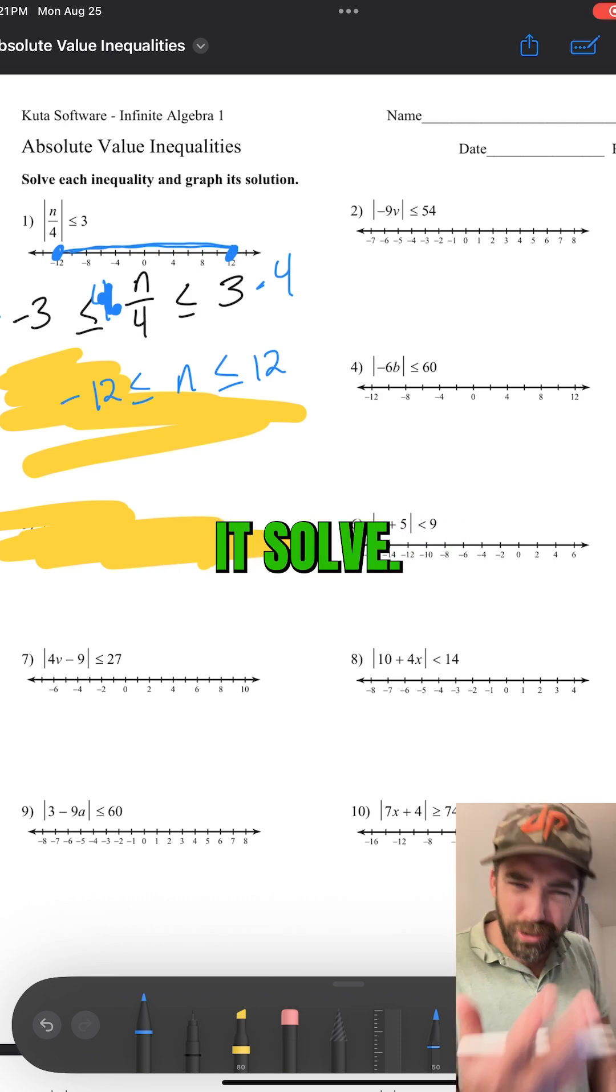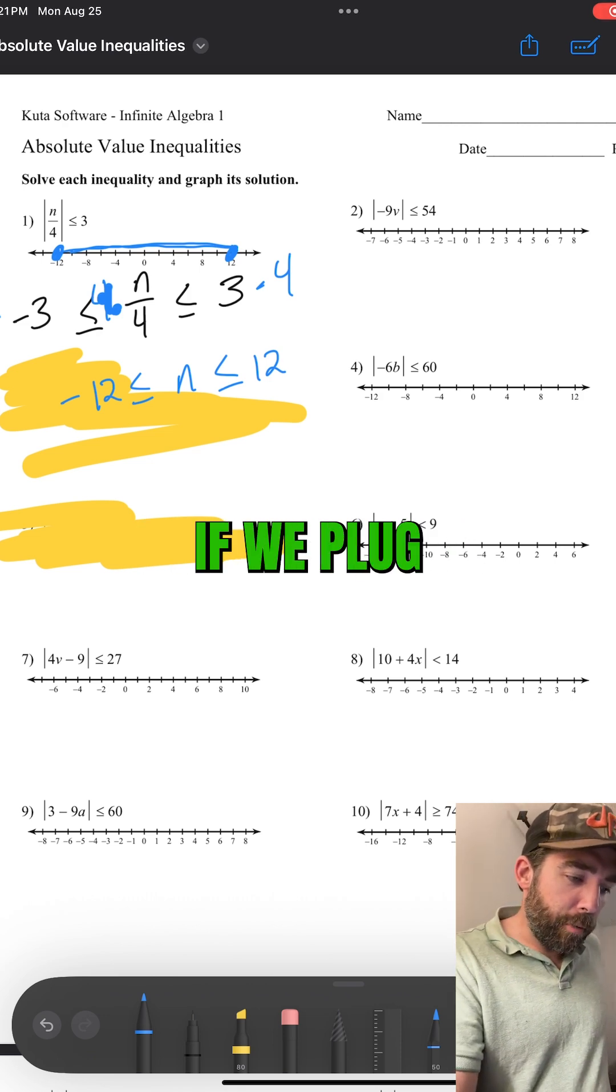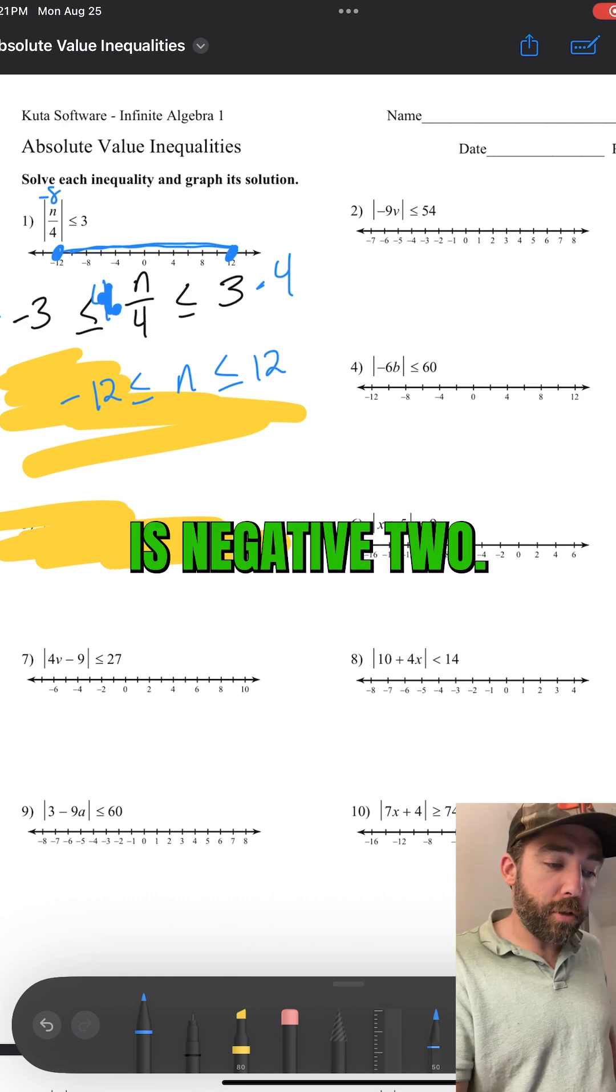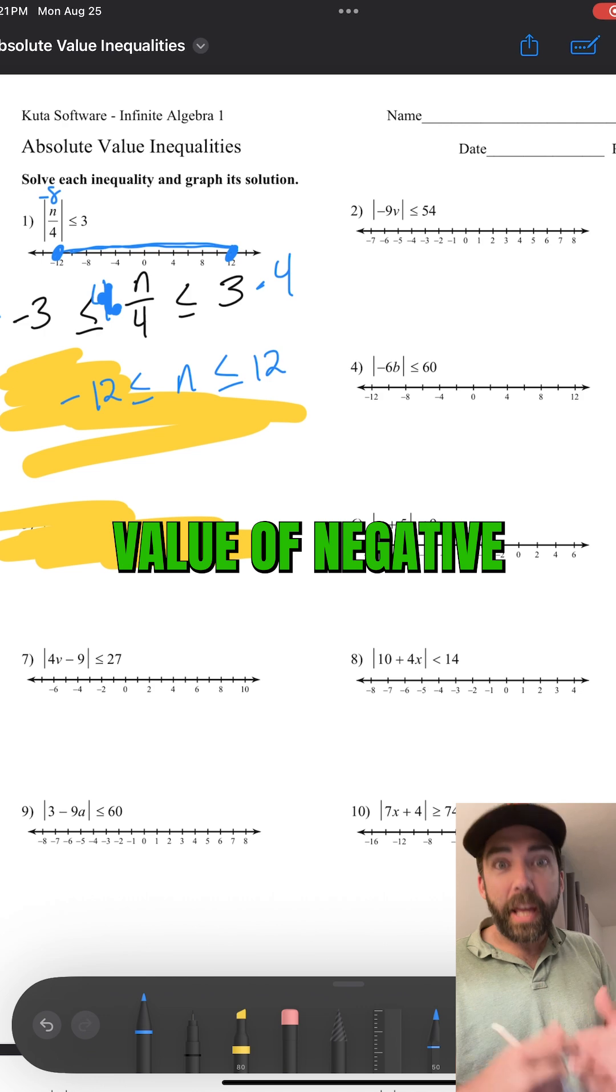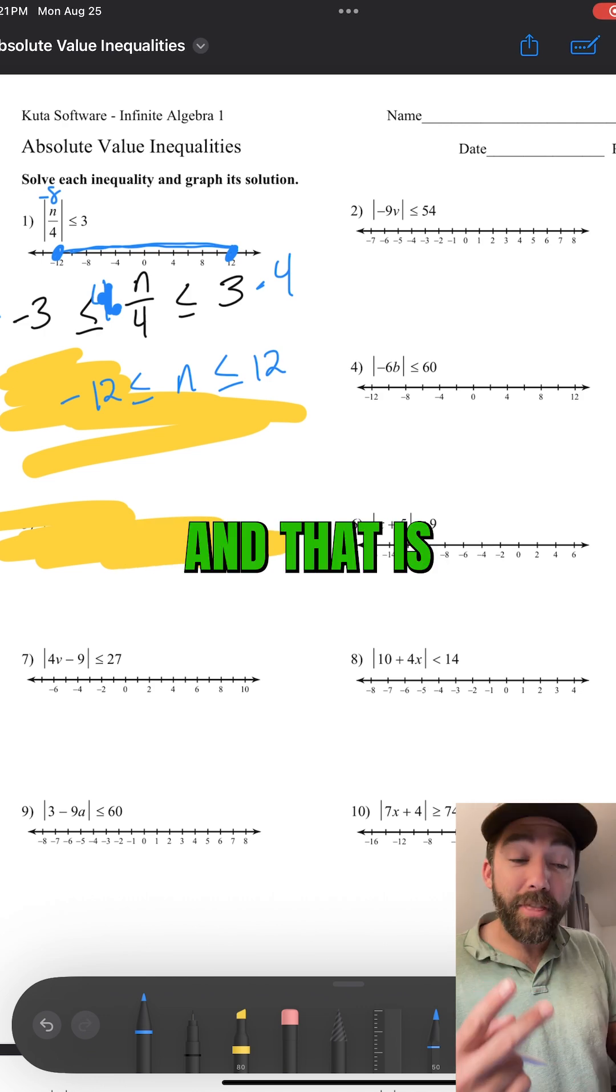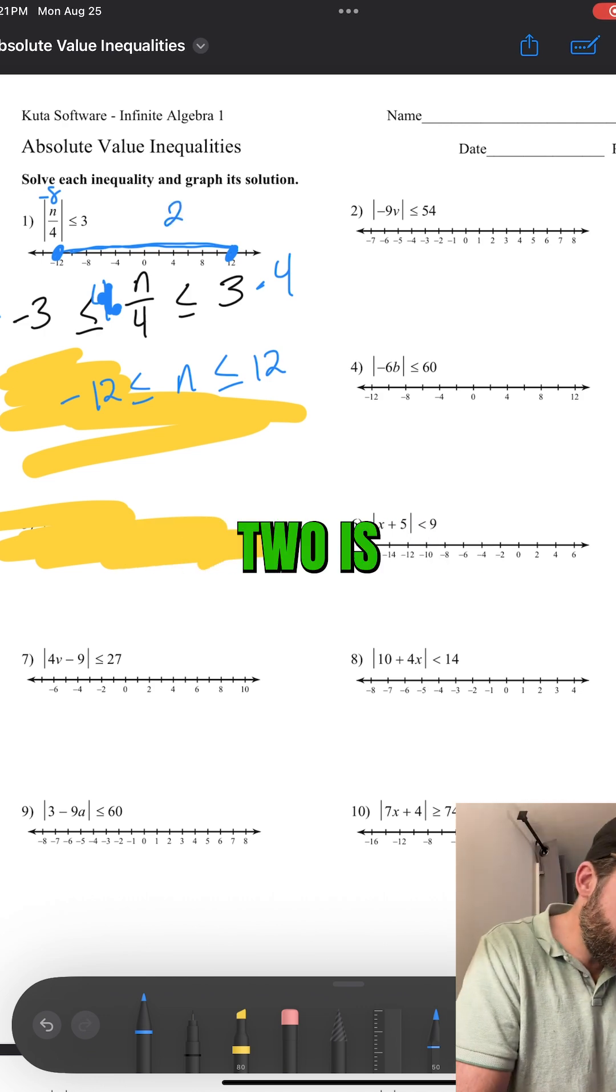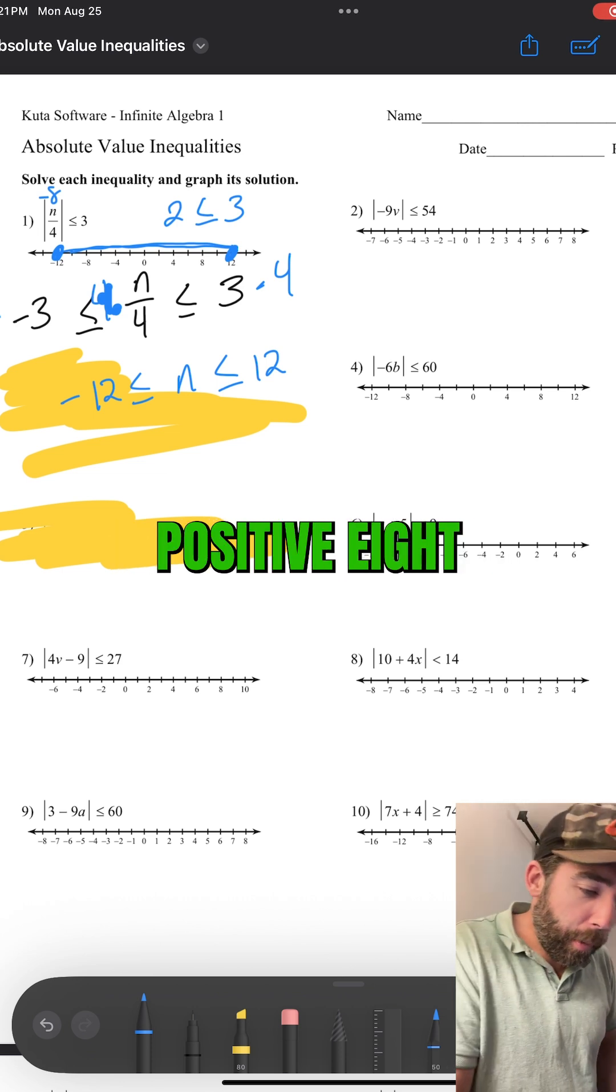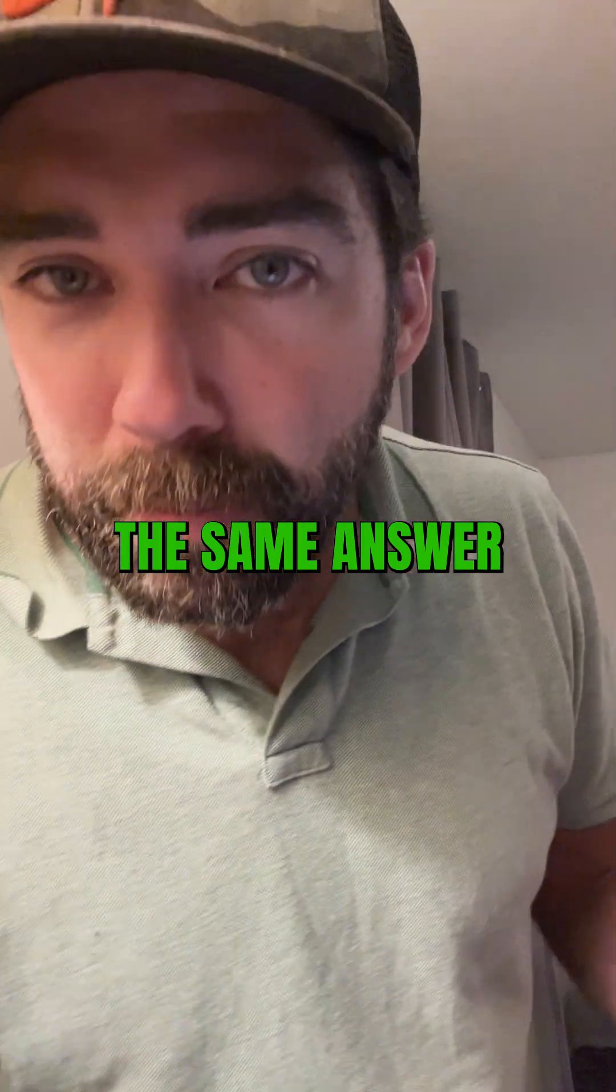Does it solve? Is it true? Well, if we plug in negative eight here, negative eight divided by four is negative two. The absolute value of negative two is two. And that is two is less than three. So it works. If you plugged in positive eight, it would be the same answer.